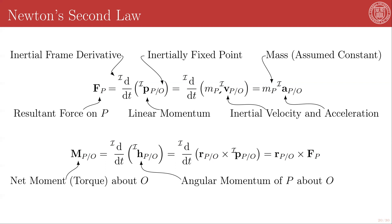If we make the assumption that the mass is constant in time, we can pull it out of the differential operator, and then we get the mass of the particle times the inertial derivative of the inertial velocity — which is the inertial acceleration of the particle with respect to that non-accelerating point O. O can be inertially fixed or moving at a constant velocity; any constant velocity will just differentiate away, so it does not make any difference.